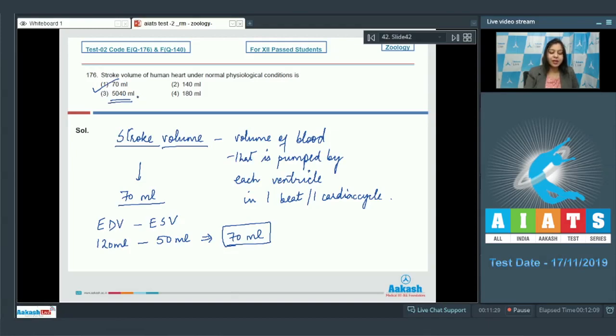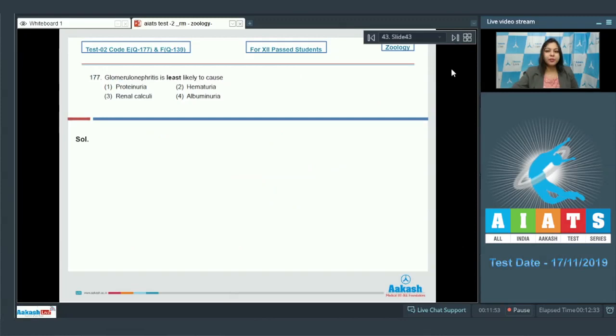5040 ml is the cardiac output, that is the amount of blood which is pumped by each ventricle in one minute. So the correct answer becomes option number one. Let us see the next question.